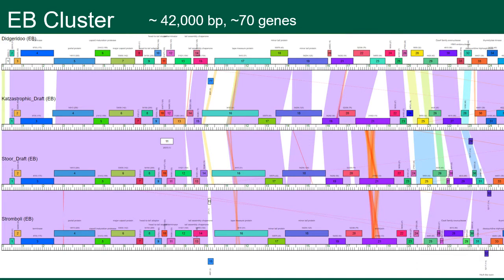One of the clusters St. Leo has isolated phage for is the EB cluster. The two phage that St. Leo isolated are Stewart and Catastrophic. When comparing the genomes, you can see that there are high levels of similarity towards the beginning of the genome and small fragments of dissimilarity scattered throughout the rest of the genome.